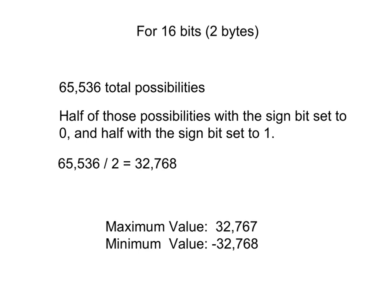At this point, given any number of bits, you should be able to calculate the total number of possibilities, the highest possible positive number whether it is signed or unsigned, and the lowest possible negative number if it is signed.